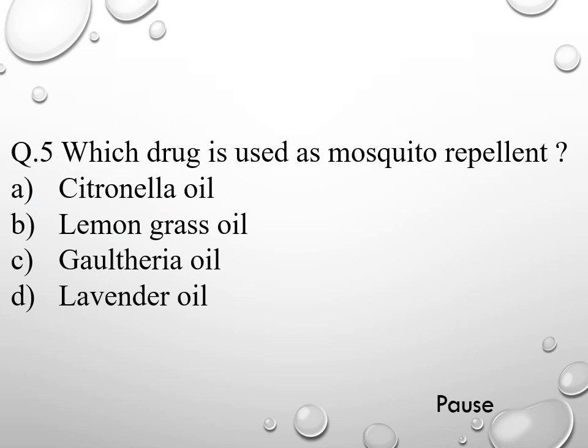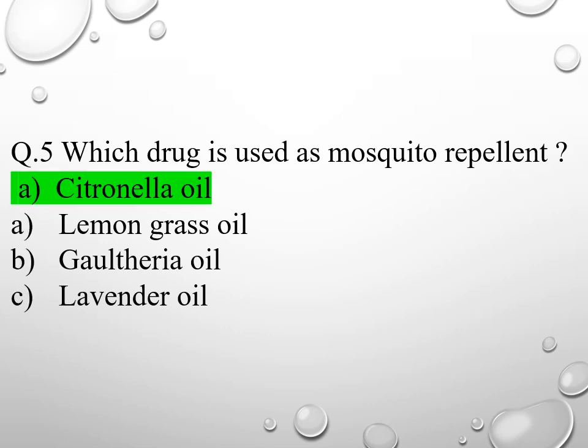Question 5. Which drug is used as mosquito repellent? Option A citronella oil, option B lemongrass oil, option C gaultheria oil, and option D lavender oil. The right answer is option A, citronella oil.